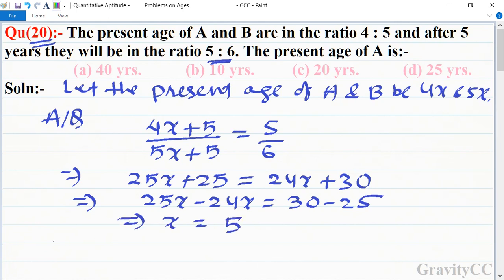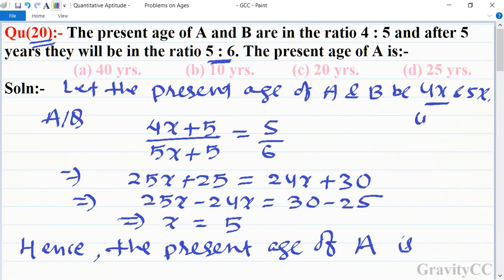Hence, the present age of A is - the present age is 4x, so 4 × 5, which is 20.